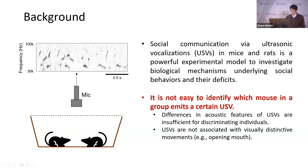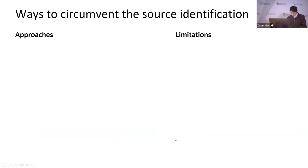As you can see here, these calls are actually coming from two different mice, but you cannot discriminate them. And USVs are not associated with visually visible movement like mouth opening in humans. So several approaches have been used to circumvent the source identification problem.